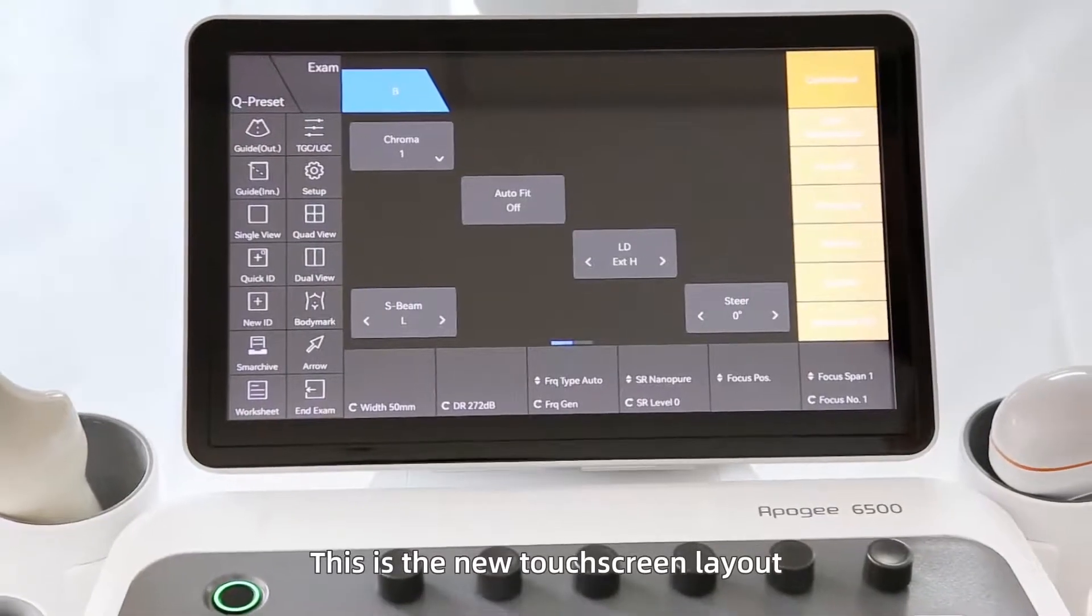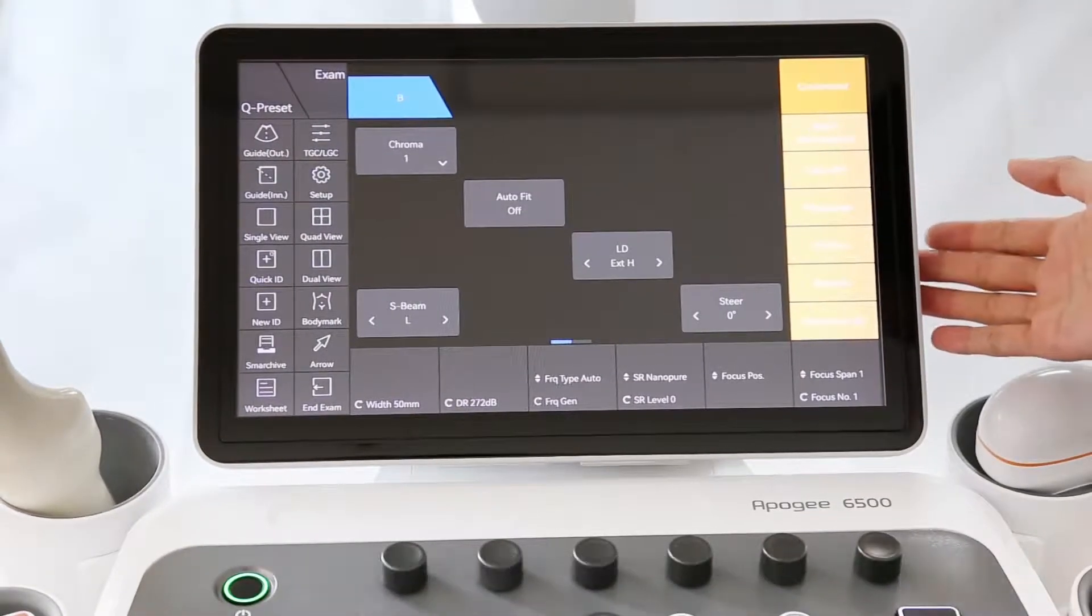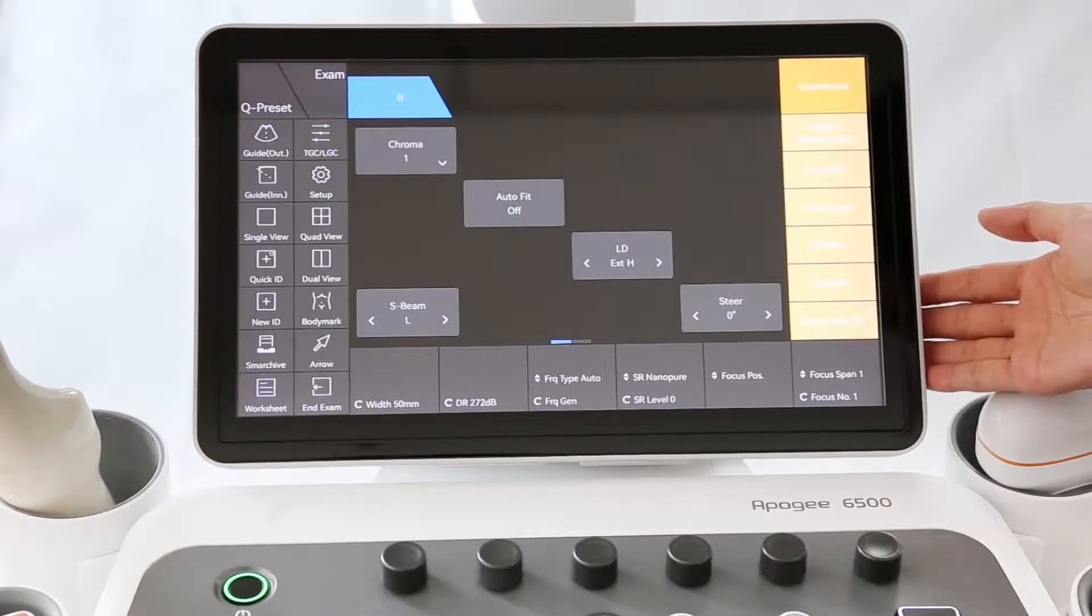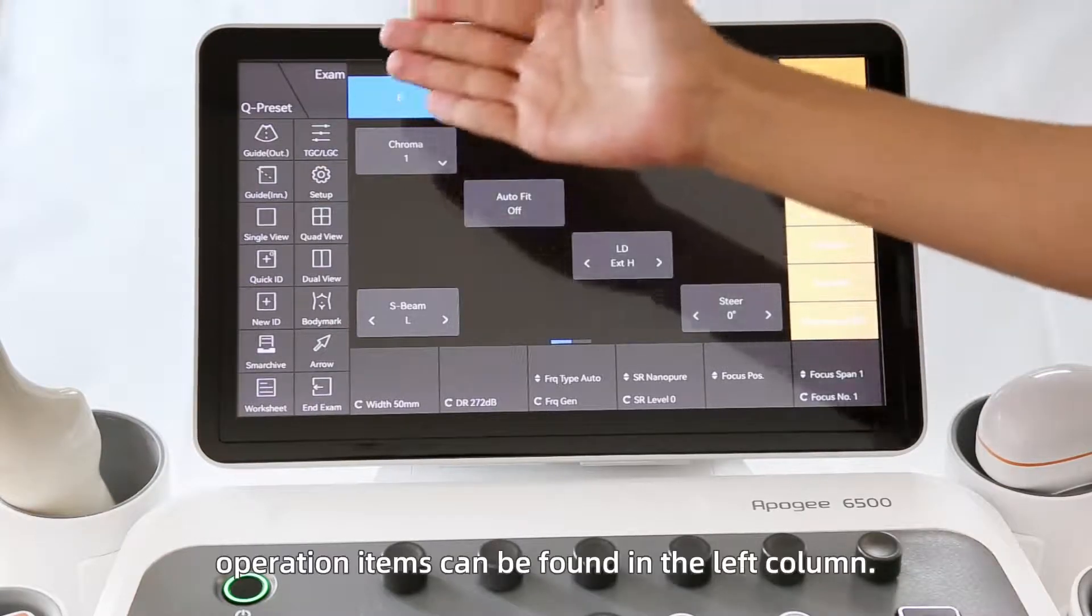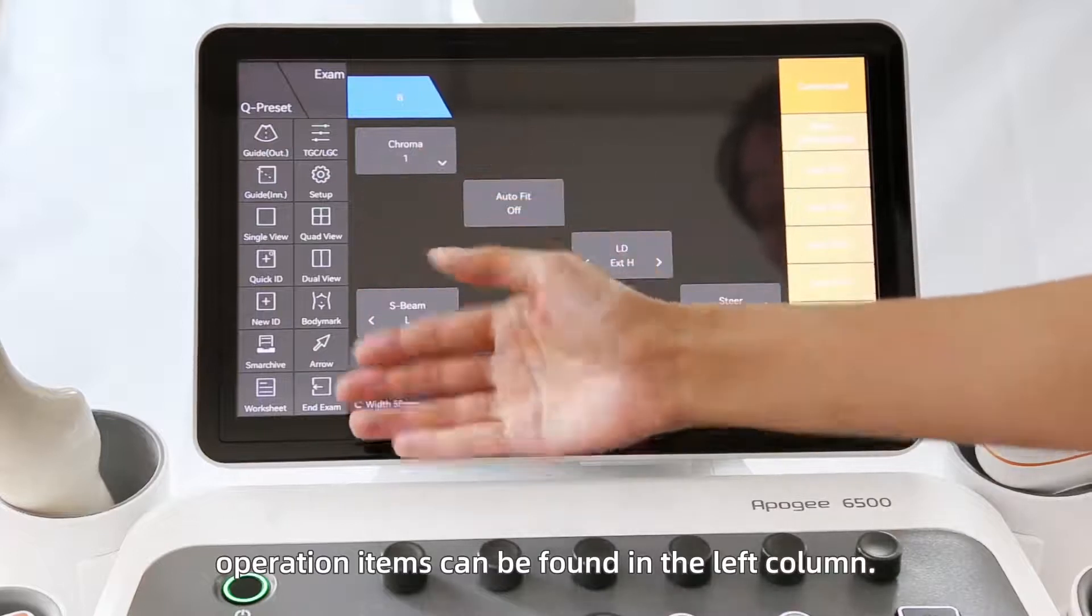This is the new touchscreen layout, which you can decide how it should look like. Common system operation items can be found in the left column.